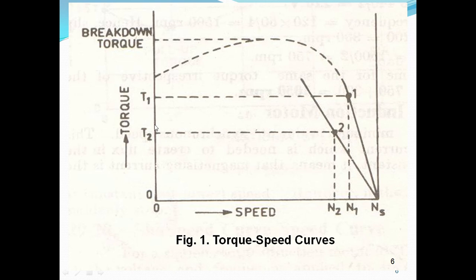Speed is on the x-axis and torque is on the y-axis. The breakdown torque is the maximum torque the induction motor can withstand. After this torque the motor is not able to bear any load — torque falls and the motor stops, where the speed is 0.